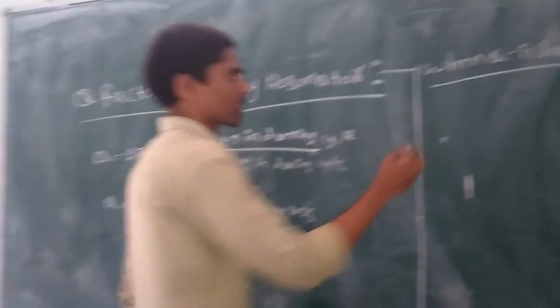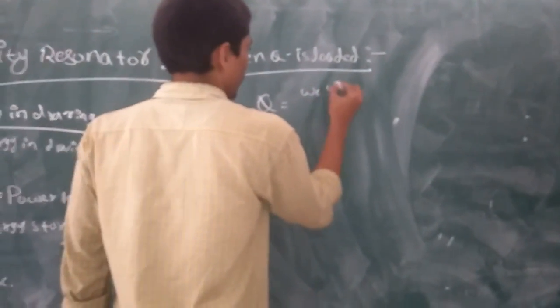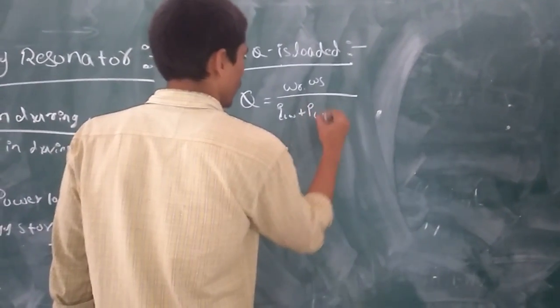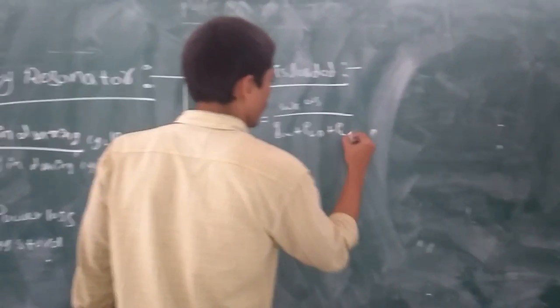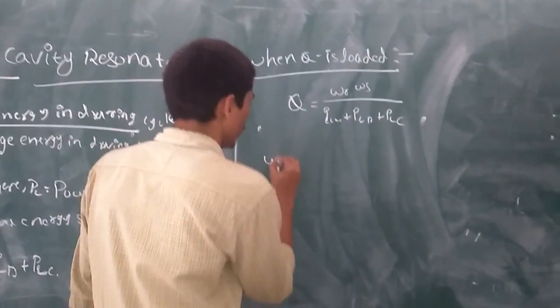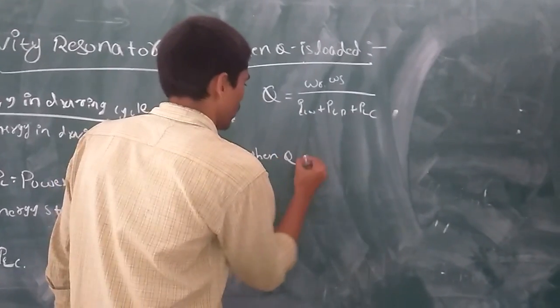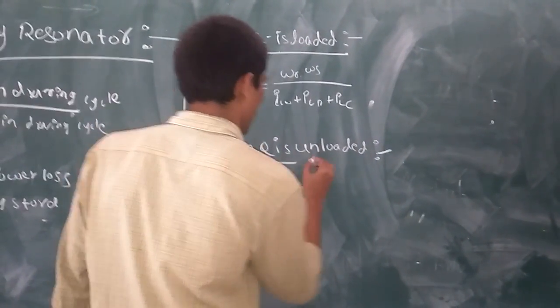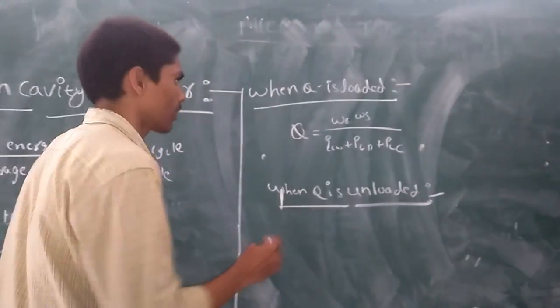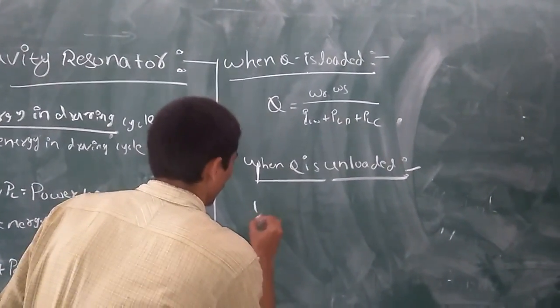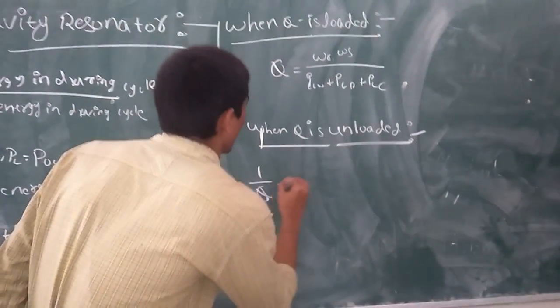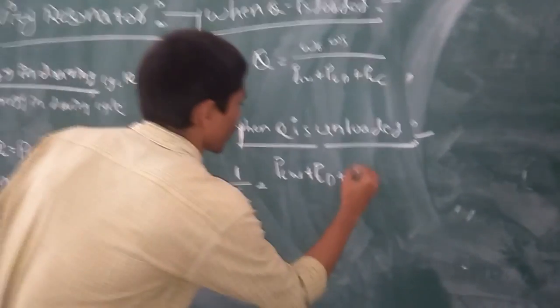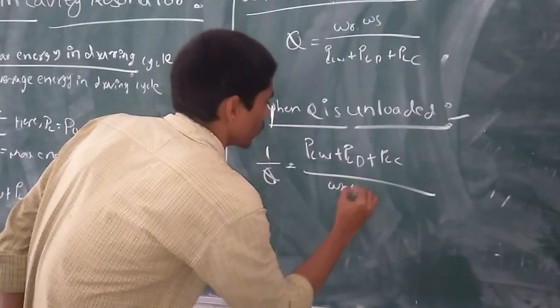When Q is loaded, Q is equal to the same formula. The reciprocal of this, 1 by Q equals power loss due to wall plus power loss due to coupling by omega r into omega s.